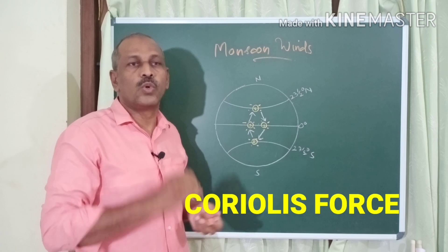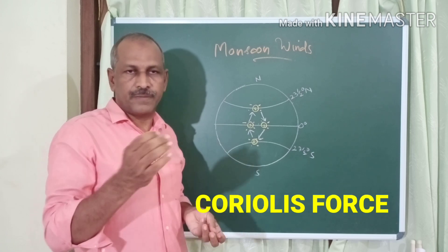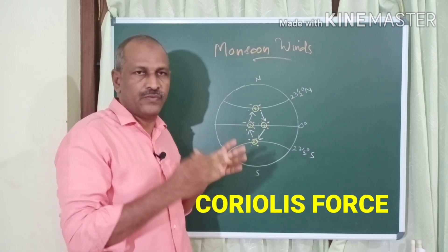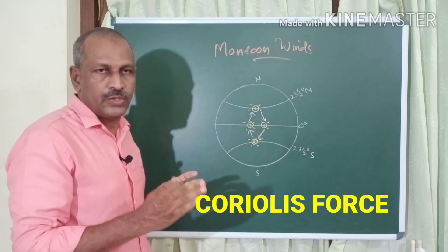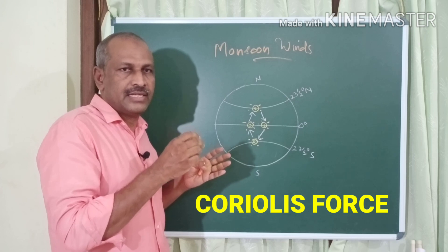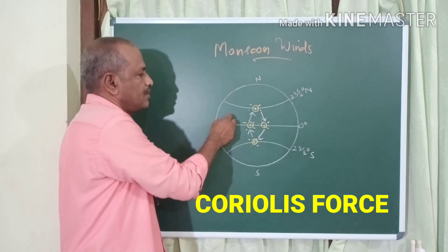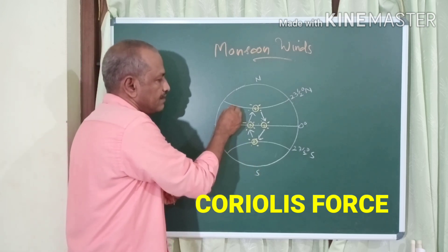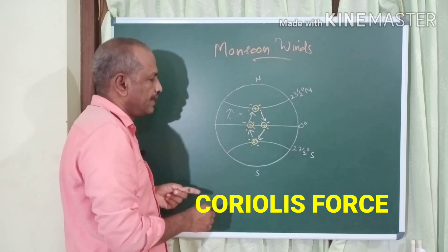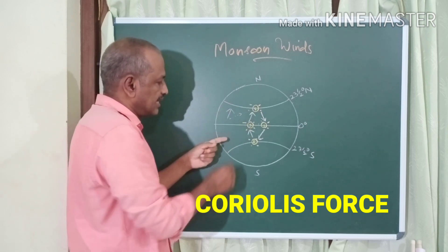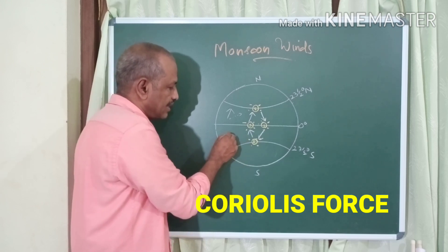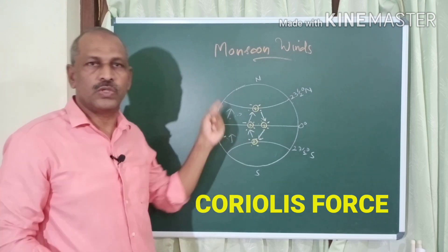The second factor is the Coriolis force. Any freely moving body will deflect to its right in the northern hemisphere and to its left in the southern hemisphere. For example, in the northern hemisphere a moving body deflects to its right, and in the southern hemisphere it deflects to its left. That is the Coriolis force.